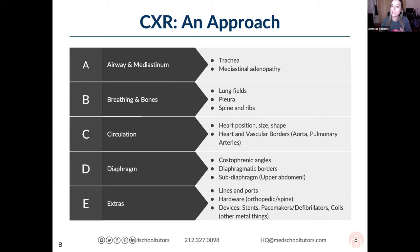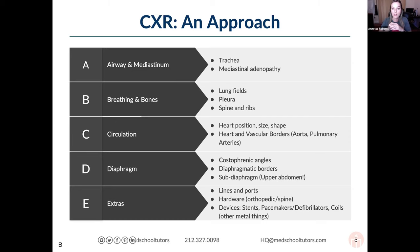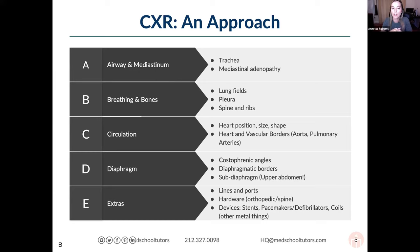C is for circulation and cardiac. Look at the heart — is it small or large, is it in the appropriate position, too far to the left, or reversed? D is diaphragm — look at the actual angles and check for effusion or consolidation near the costophrenic angles. E is for extras: lines and cords, which are extremely important in an ICU setting, as well as hardware like pacemakers or scoliosis repair devices.